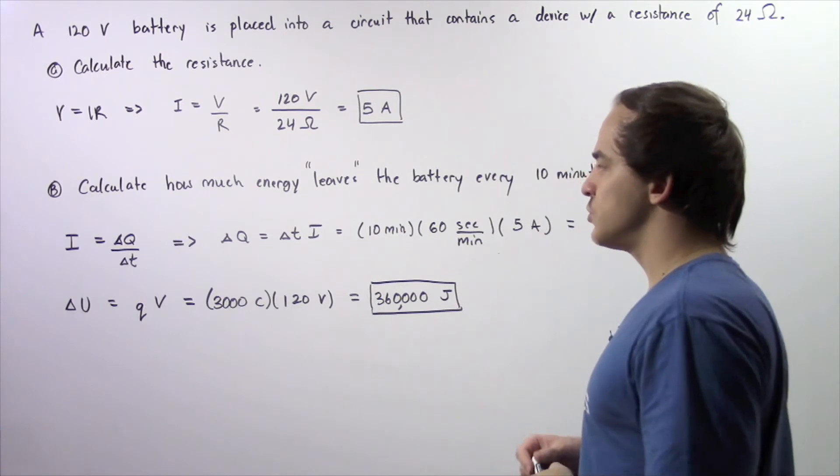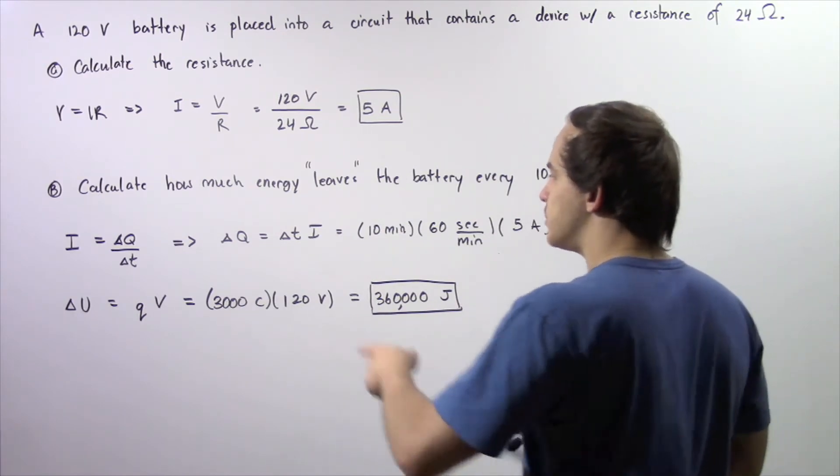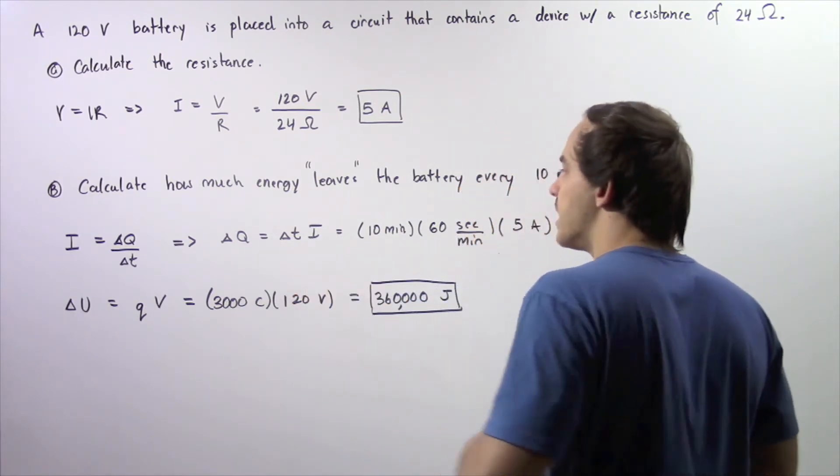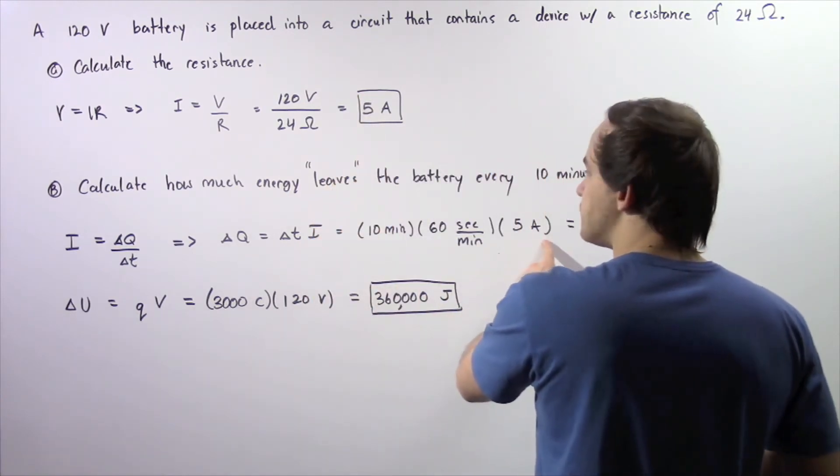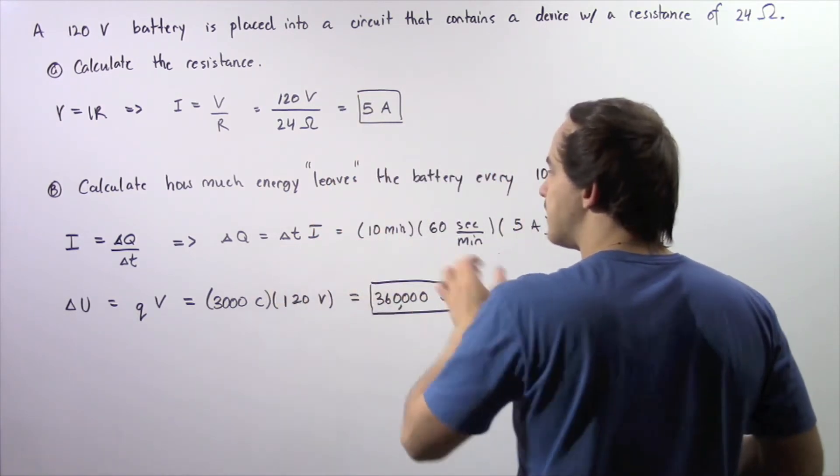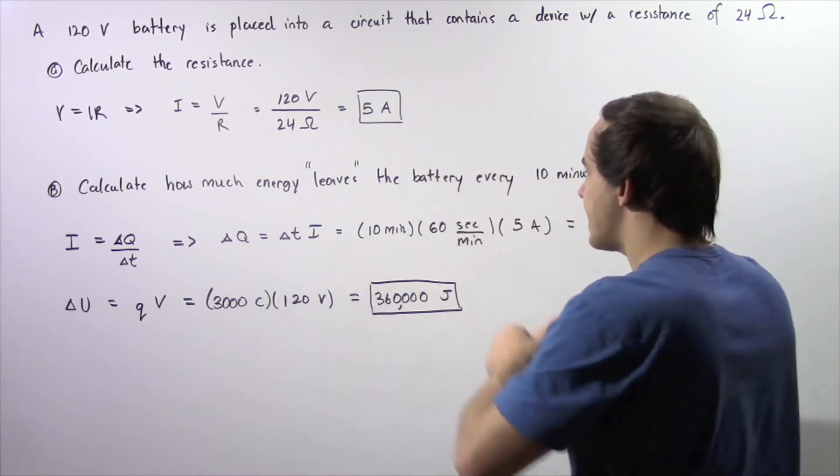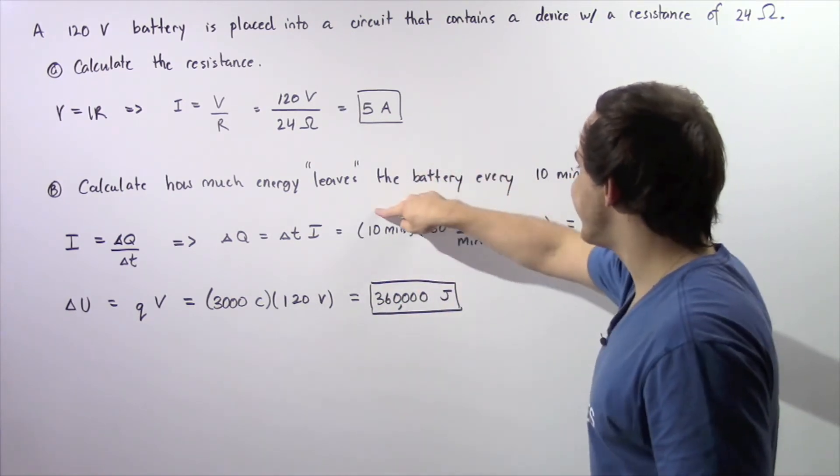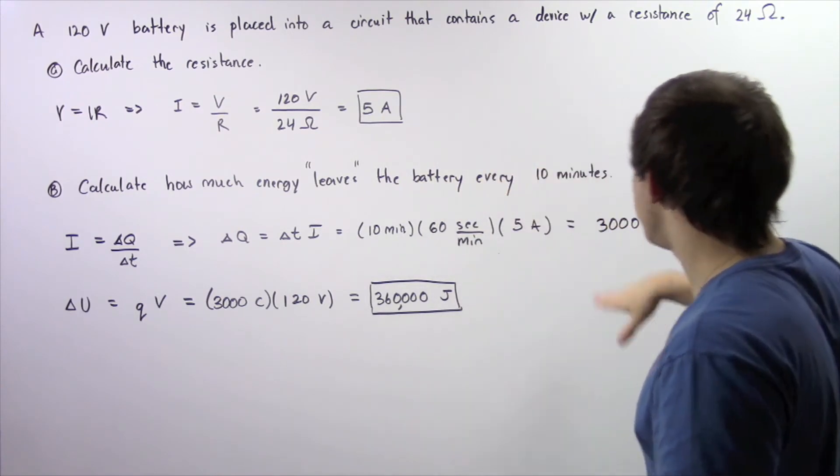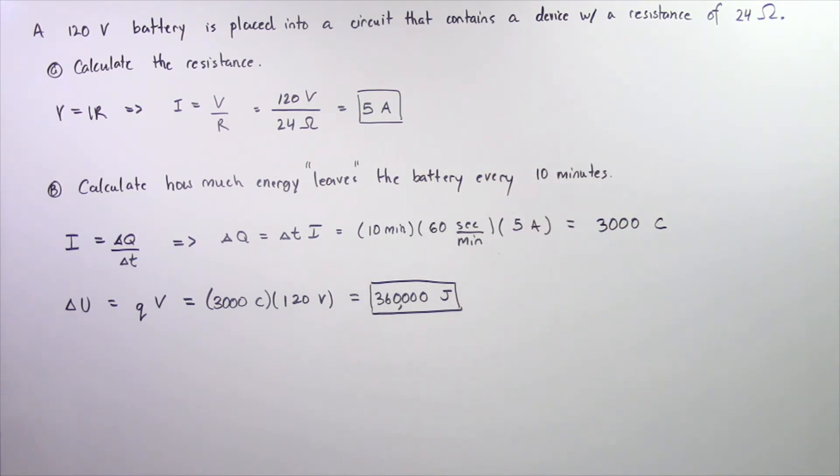The change in Q is equal to the product of the change in time and our I. Our I is given to be 5 amps. Our change in time is 10 minutes multiplied by 60 seconds per minute. The minutes cancel and we're left with 600 multiplied by 5 gives us 3000 coulombs.